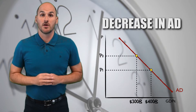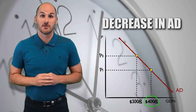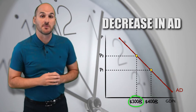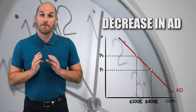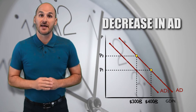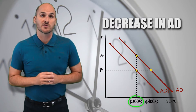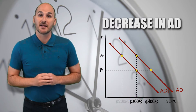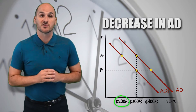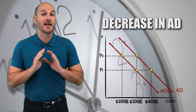At a price of P1, a real GDP output of $400 billion is demanded. At a price of P2, a real GDP output of $300 billion is demanded. But if aggregate demand decreases, the real GDP output demanded at a price of P1 decreases to $300 billion, and the real GDP output demanded at a price of P2 decreases to $200 billion. Notice that aggregate quantity demanded decreased at every price level.